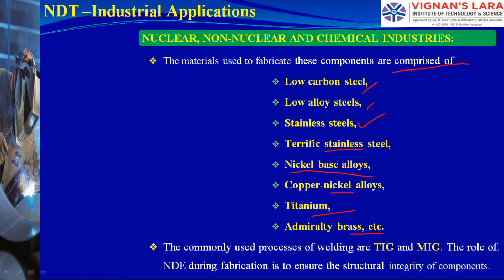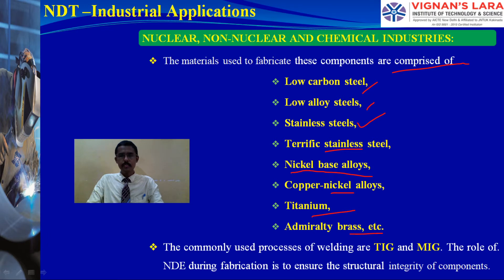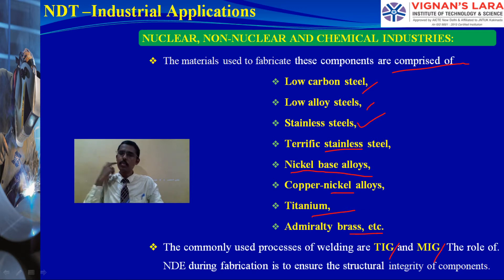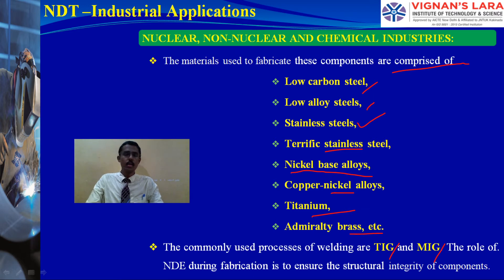The commonly used welding processes are TIG and MIG. Additionally, SMAW (Shielded Metal Arc Welding), TIG (Tungsten Inert Gas), and MIG (Metal Inert Gas) processes are frequently used in fabrication of pressure vessels and boiler components.